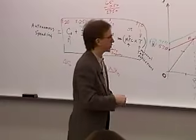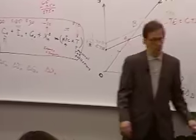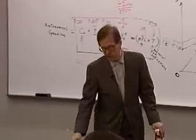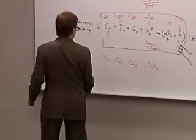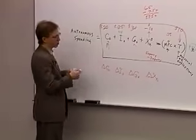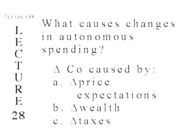Autonomous consumption spending could change due to changes in expectations of prices. For example, if you think prices are going to rise, it's a good time to spend your money today before the prices go up — and that would raise consumption spending.